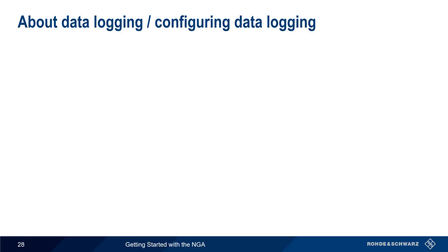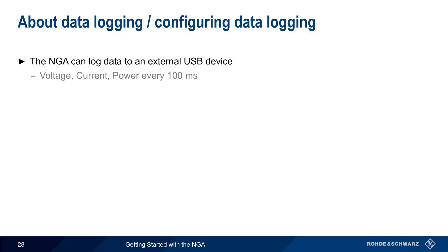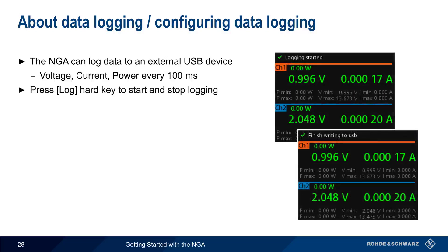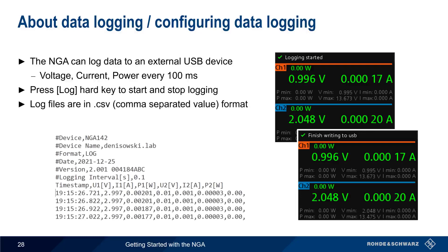Another helpful function on the NGA is its ability to log data to an external device. Specifically, voltage, current, and power can be logged to a file every 100 milliseconds. To start and stop logging, use the log hard key. Log files are in the standard CSV, or comma-separated values, format and are automatically named using the current time and date.